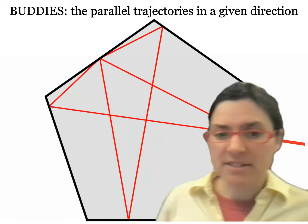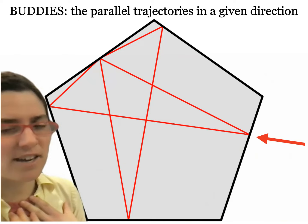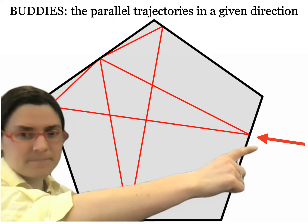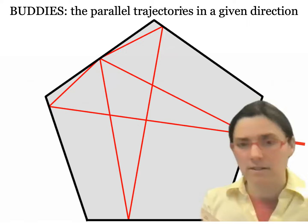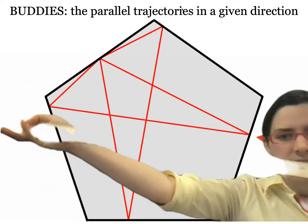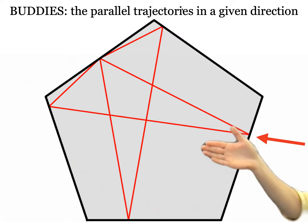Buddies — always good to have a buddy. The buddies are parallel trajectories in a given direction. Suppose you have a regular pentagon billiard table and you've decided to hit it in a certain direction, but you haven't decided exactly where — here, or here, or here. You know the direction but not the exact starting point. What happens to the trajectory? Do you get different stuff or the same stuff?